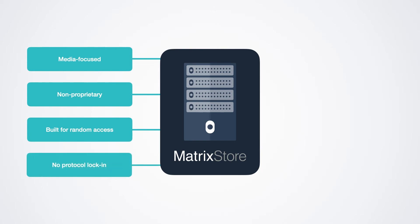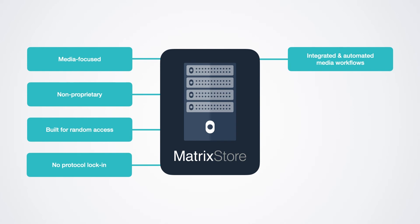It is free from protocol lock-in. Thanks to the incredibly mature underlying Matrix Store API, you can access your content with any protocol, including S3, Samba, NFS, and more. It is integrated into a large number of third-party media workflow applications, from Avid and Signiant to Telestream and Bidispy, and many more. It has a free local file-to-object interface running on Mac, Linux, and Windows, negating the need for a gateway server when more performance is required.